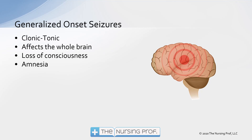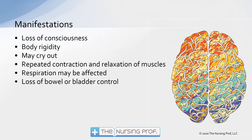The generalized onset seizure is your clonic-tonic grand mal kind of seizure. It affects the whole brain with loss of consciousness and usually amnesia. Symptoms include loss of consciousness, body rigidity, and repeated contraction and relaxation of muscles. Because of that muscular contraction, the patient is using up glucose systemically, so the postictal period may last longer since they're starting with less glucose in the periphery as well as the brain. We may also see loss of bowel or bladder control.